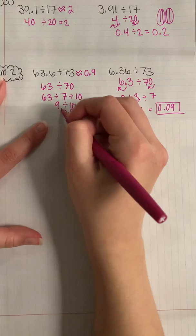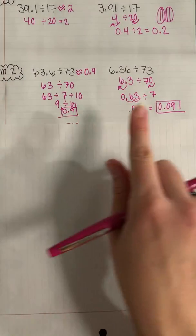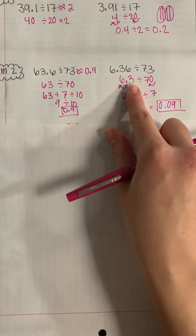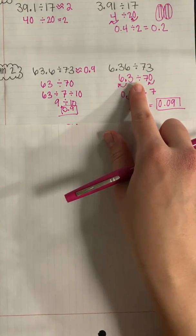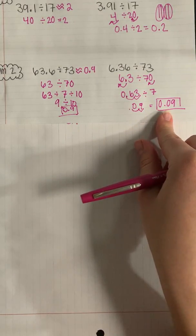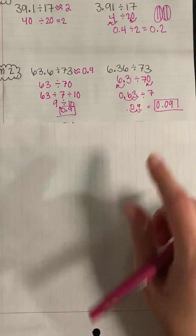That makes sense as an estimated quotient, especially when we did this first problem, because now instead of 63 pounds we only have 6 pounds or 6.3 pounds. So every bag is going to have way less than this over here. Our answer should be way smaller.